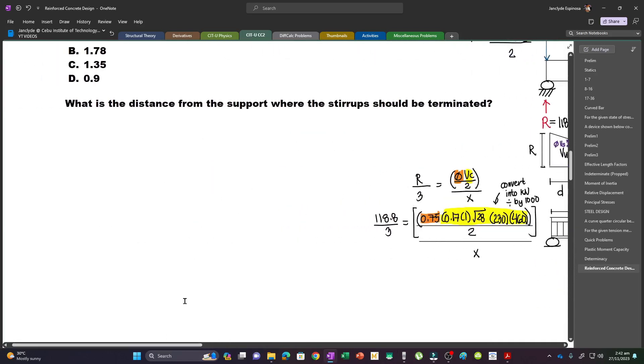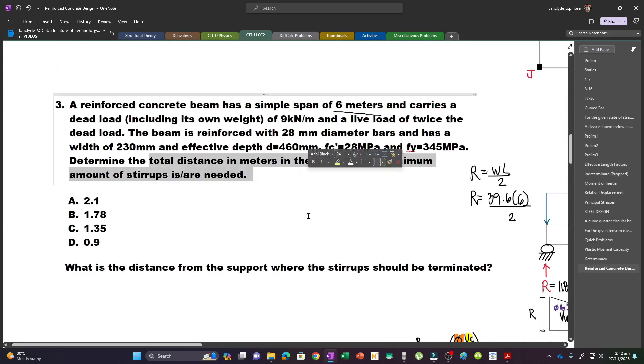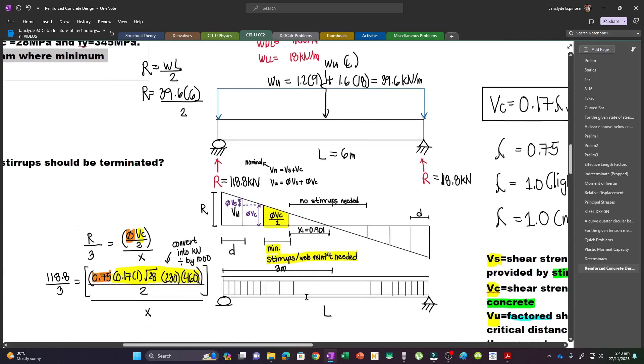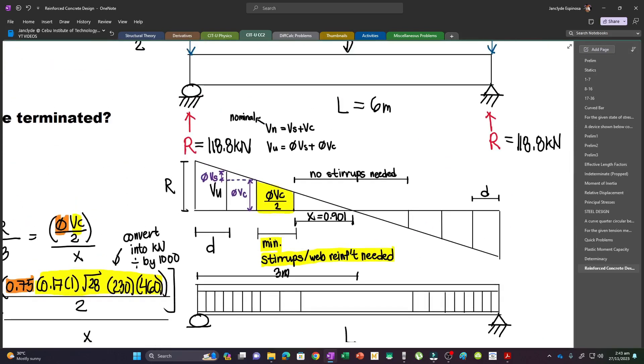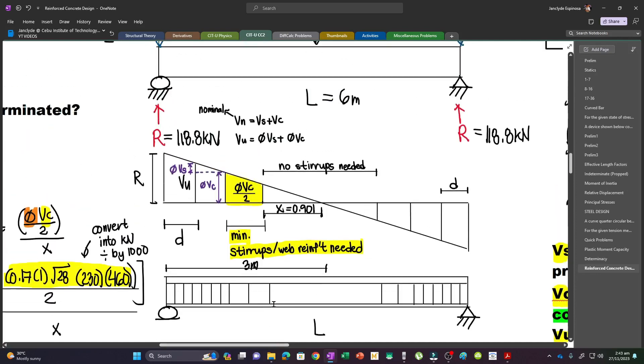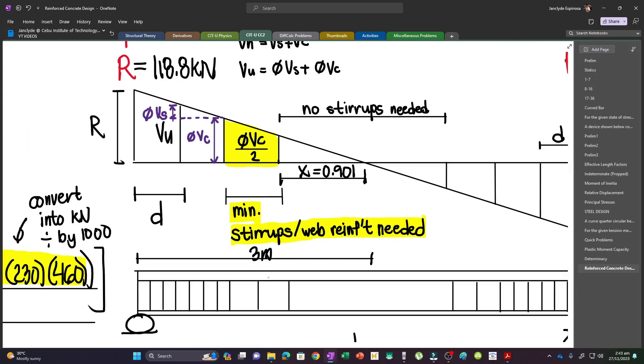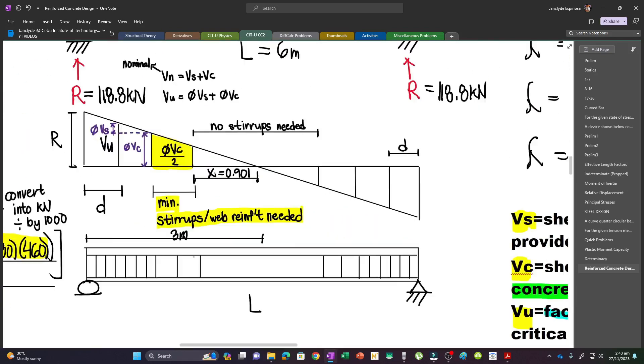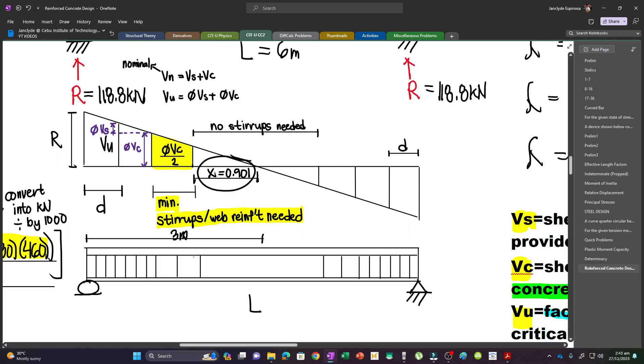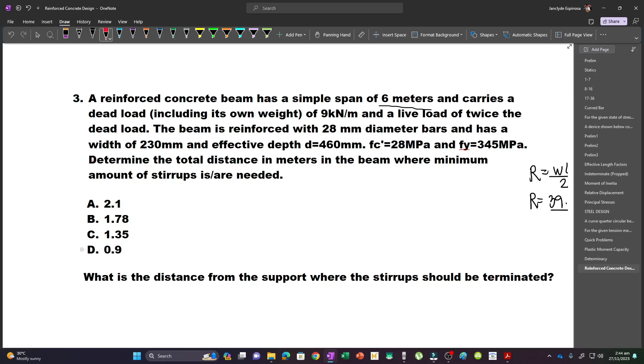Now, our question is determine the total distance where minimum amount of stirrups is needed. This is the distance we're interested in. However, we can simply say that this whole distance is simply twice the value of this one, because this is phi VC over 2, and this distance is phi VC, so it's multiplied by 2. So this distance is also 0.901. So that's our answer, which is letter D, 0.9.